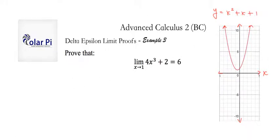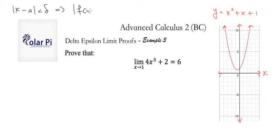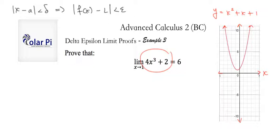We know that to do these limit proofs, what we need to start with is the fact that if the absolute value of x minus a is less than delta, then this will automatically need to imply the difference between f of x and L, the limit value, be less than epsilon. We have to adapt this to our particular situation, which in this case involves a being 1 and f of x being the cubic that I just circled and L being 6.